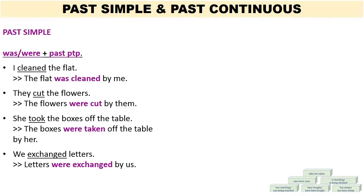Next example: They cut the flowers. In the passive, this would read: The flowers were cut by them. Third example: She took the boxes off the table. The boxes were taken off the table by her. So again, 'she' is a singular noun, but 'boxes' is a plural noun — we need 'were.' Last example: We exchanged letters. 'Letters' being a plural noun. Therefore, letters were exchanged by us.